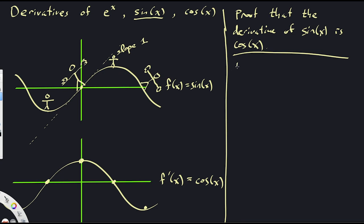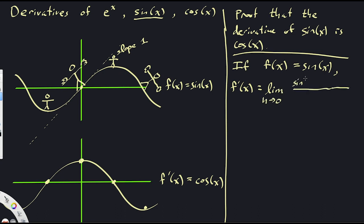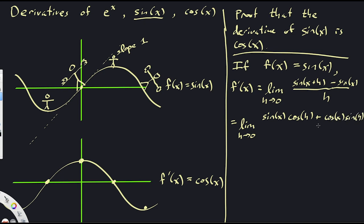So if we want to really figure out the derivative of sine of x, we use the limit definition. F prime of x, where our function is sine of x, is the limit as h goes to zero of [sin(x+h) - sin(x)] / h. And now we can use something called the addition formula for angles. This is equal to the limit as h goes to zero of [sin(x)cos(h) + cos(x)sin(h) - sin(x)] / h.